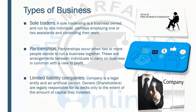Now the second thing is the types of business. We have three types: the first is the sole trader, also known as sole proprietorship; the second is partnership; and the third is limited liability companies. The sole trader means a single person is involved in the trading activity - a single person controls and owns the business. They may have employees, but ownership and control rests with one person.